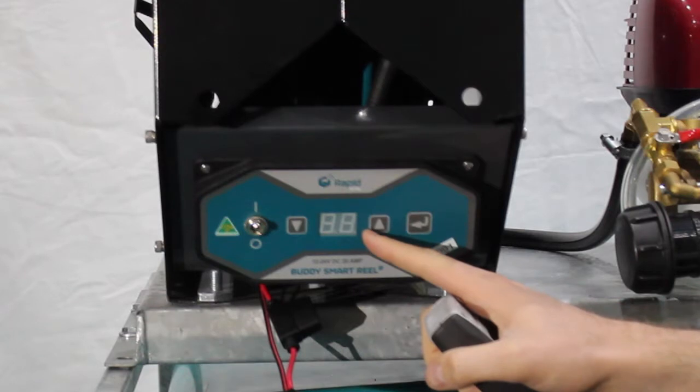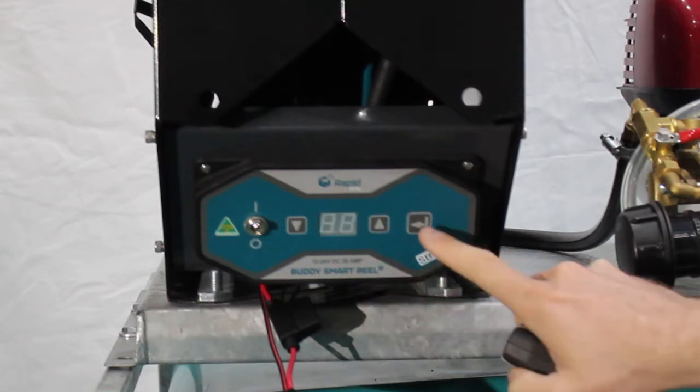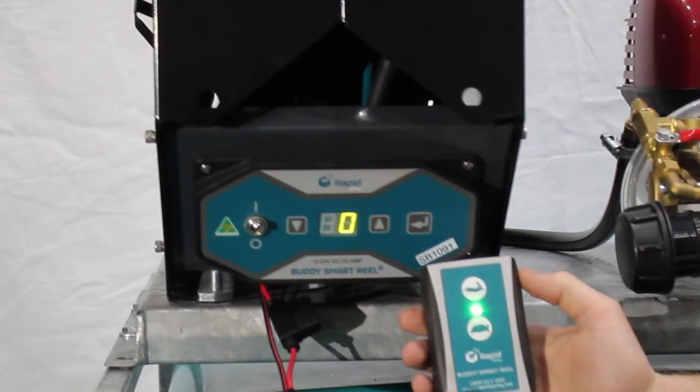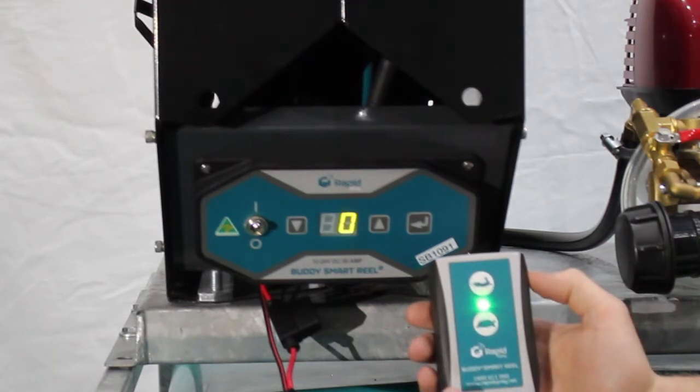PA will come up on the screen of the buddy wheel. Acknowledge this by pressing the enter key once. The PA will flash and a green light will flash on the remote control.